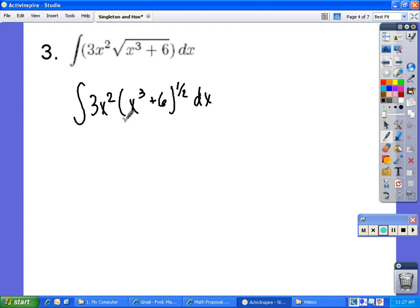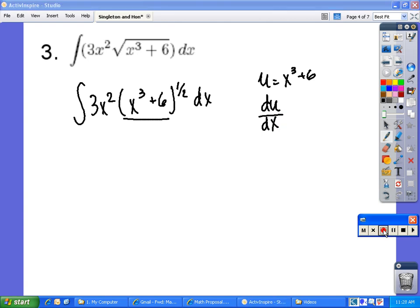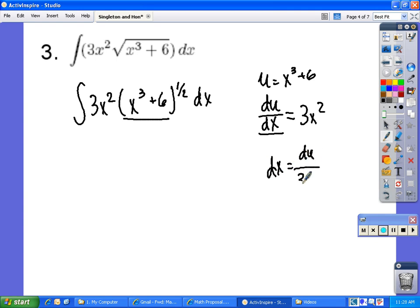For our u we will pick x to the 3rd plus 6. We then have to determine du over dx, which equals 3x squared. And because we need to determine dx, we end up with dx equals du over 3x squared.